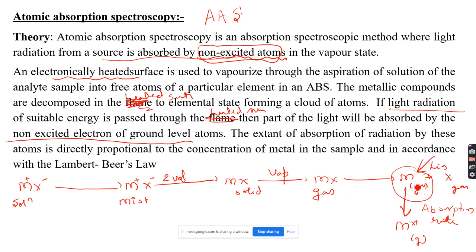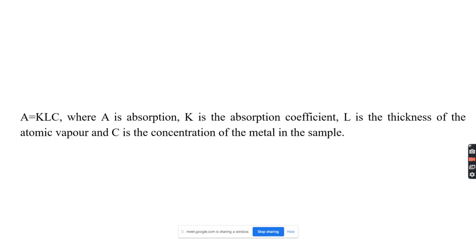The extent of light energy absorption by these atoms is directly proportional to the concentration of the element or metal in the sample, in accordance with Lambert's law. A given amount of metal present will absorb the same quantity of light and become excited to a higher energy level. By detecting the absorption of this light energy, we can determine the quantity of metal atoms present in the sample.